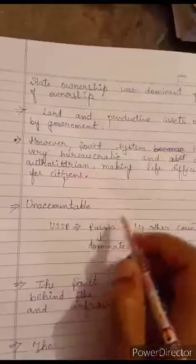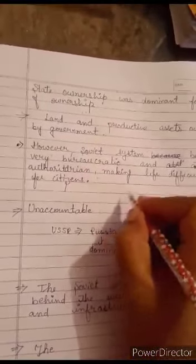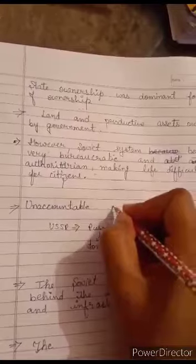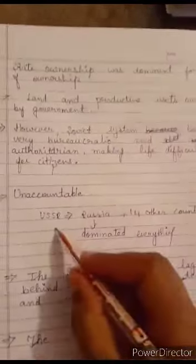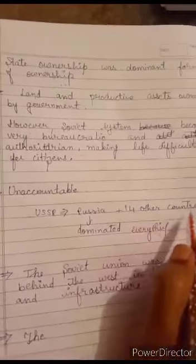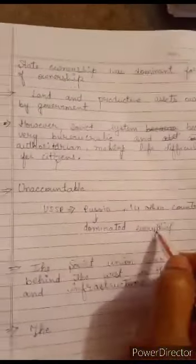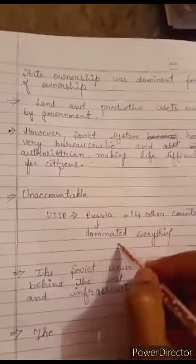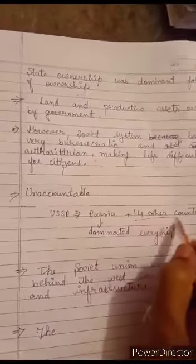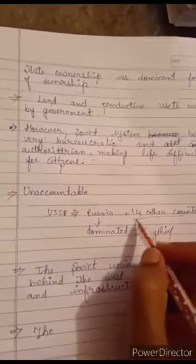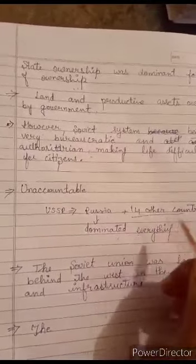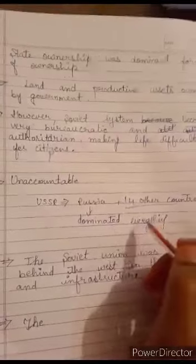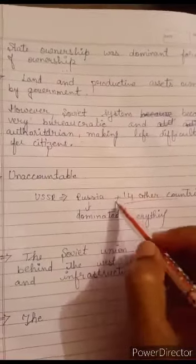Here UNACCOUNTABLE. Nobody was responsible to give answer regarding any kind of policy in USSR. USSR was made up by Russia plus 14 other countries. Russia was the dominant and everything. That's why what was decided by Russia other 14 countries were following them. That's why there was a little bit of difficulty among the people to follow the policies of USSR.